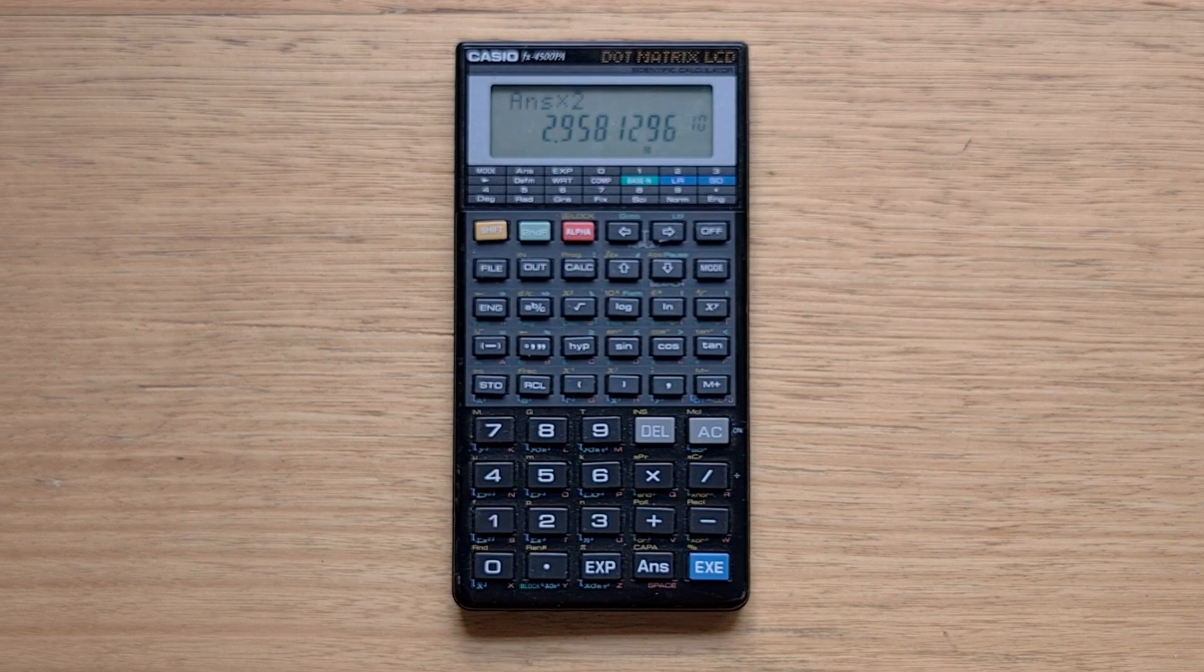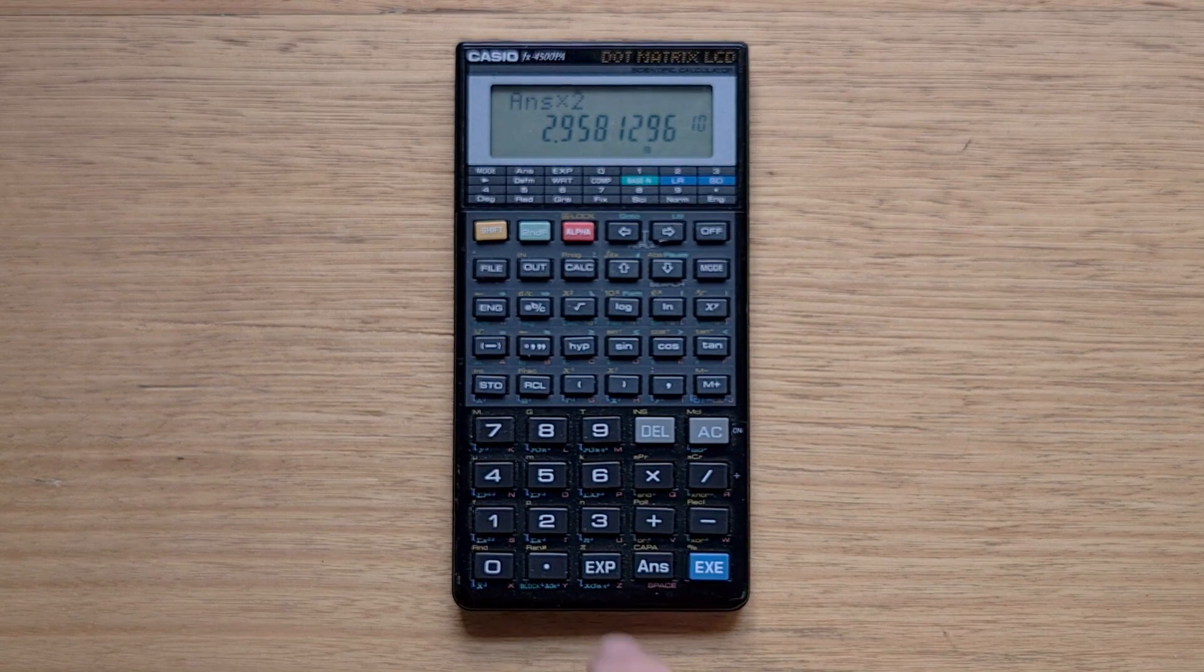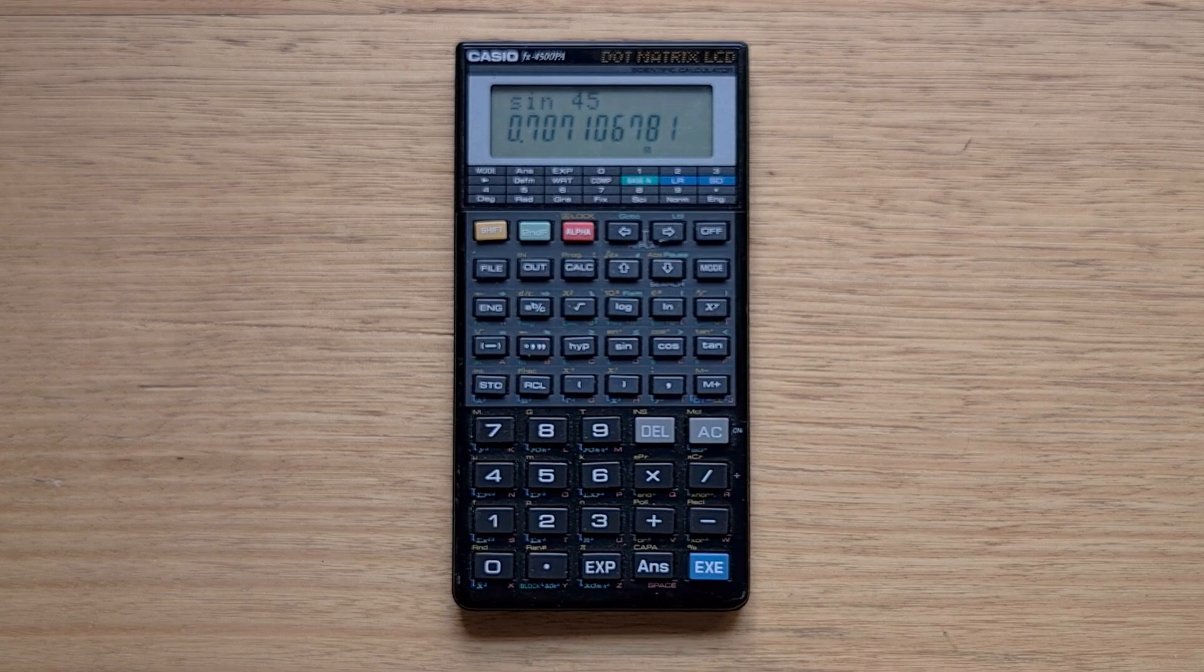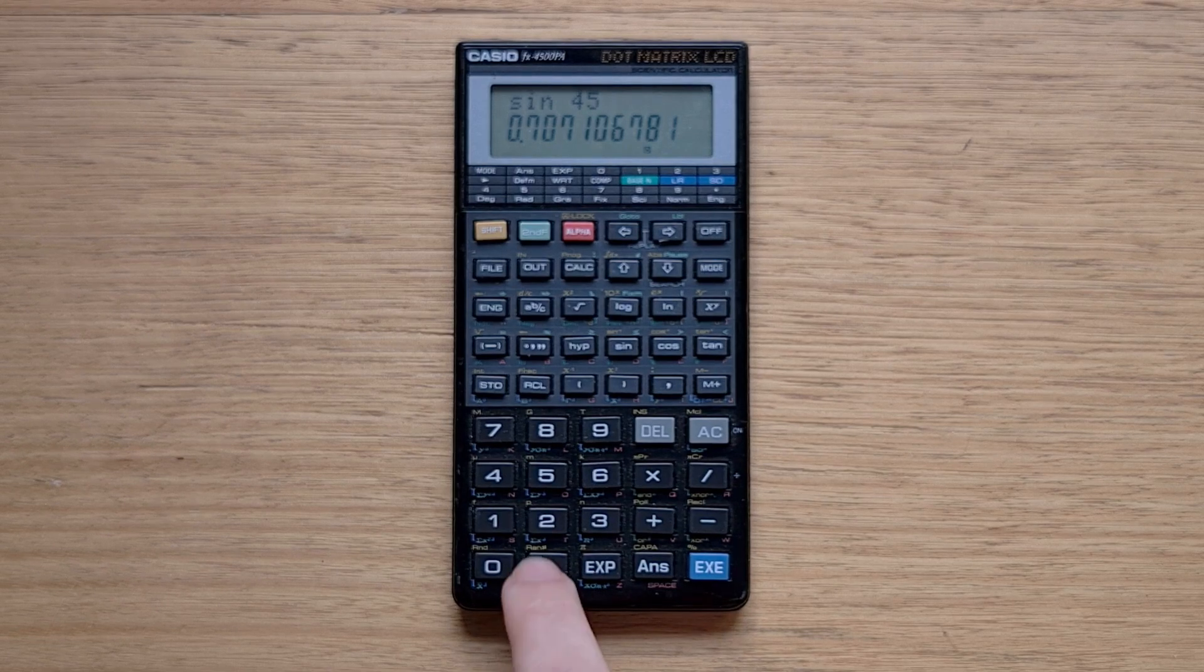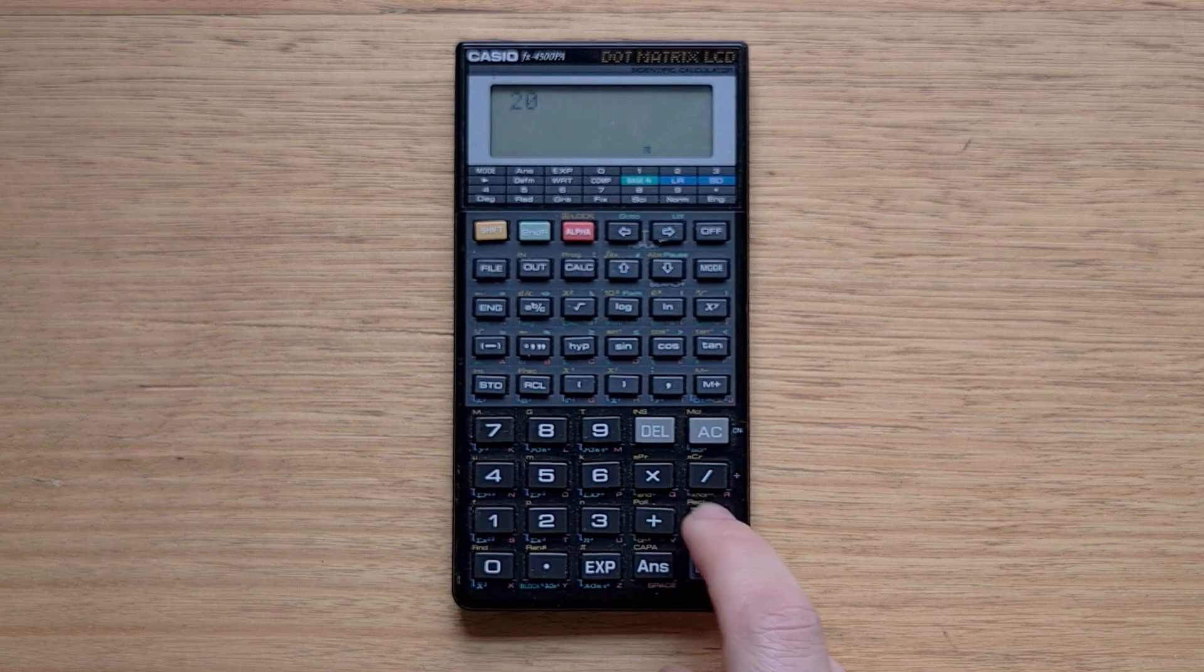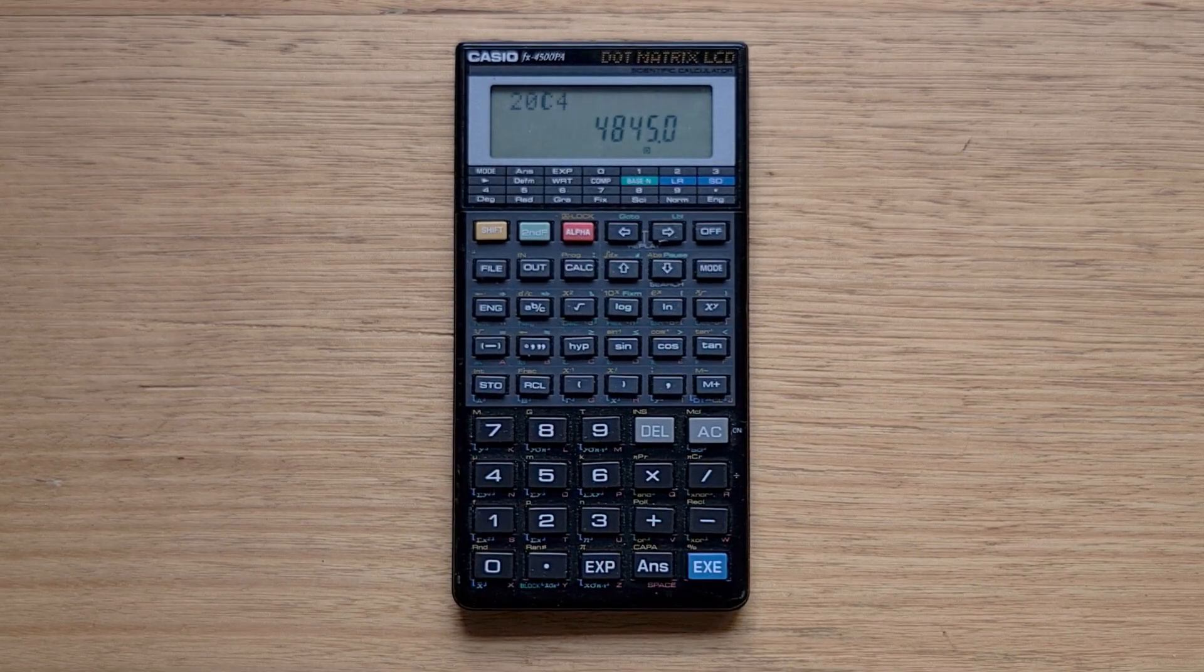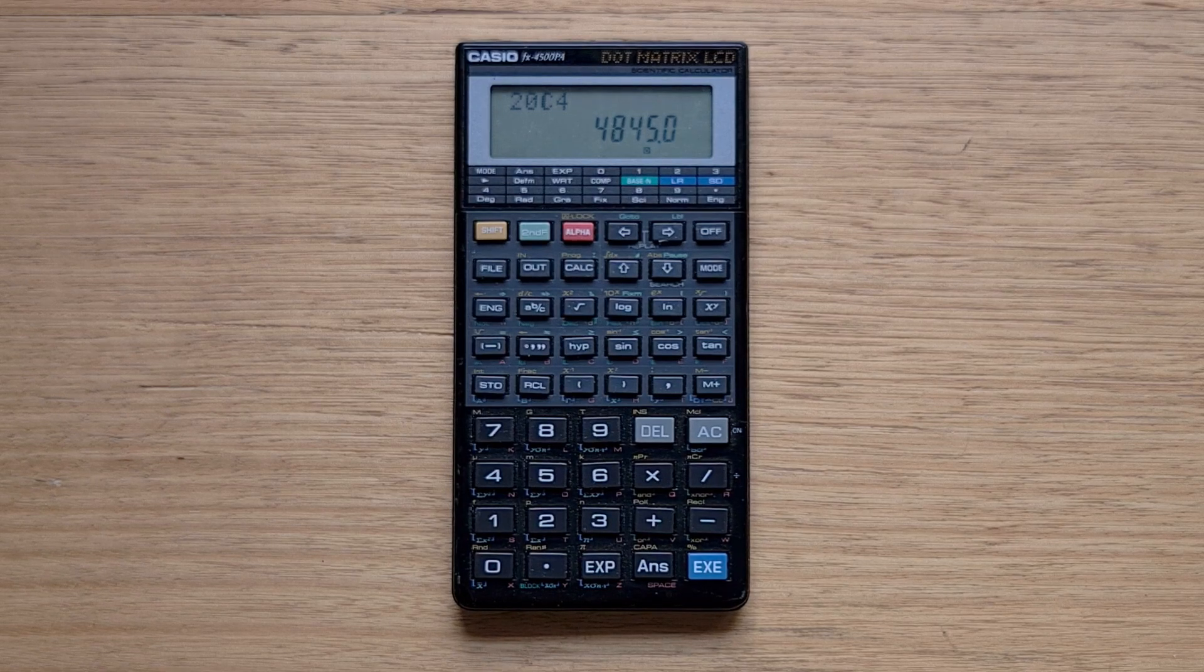Like other Casio calculators, you can refer to the previous answer using the answer key. Functions that take a single argument, like sine, you enter prefix. And some functions that take two arguments, like combinations, you enter infix.